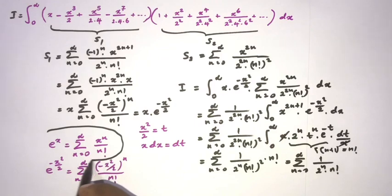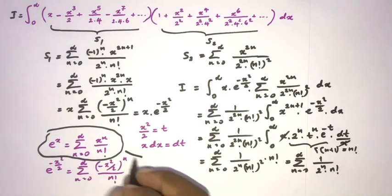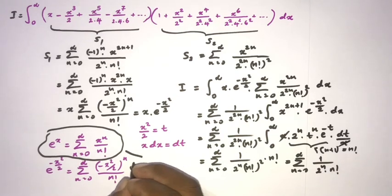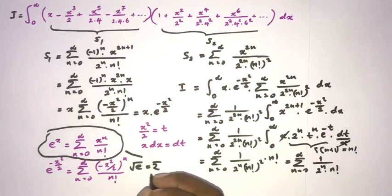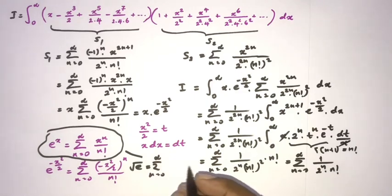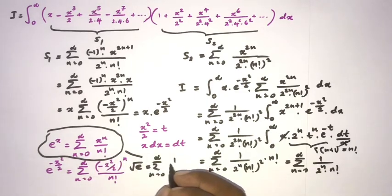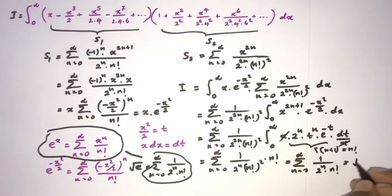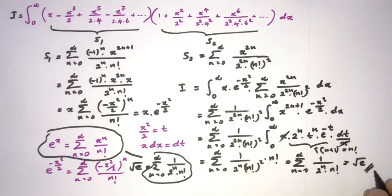We recognize this as the power series for e^x. Plugging in x = 1/2, we get e^(1/2), which is the square root of e. So the sum from n=0 to infinity of 1 over 2^n times n factorial equals √e. This is the answer for the integral.